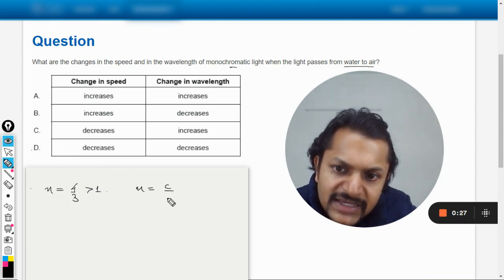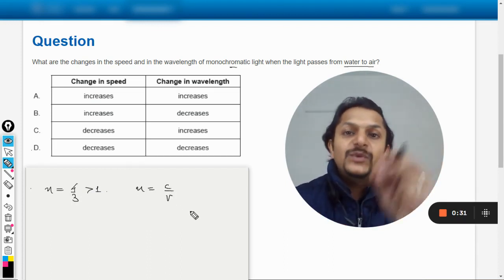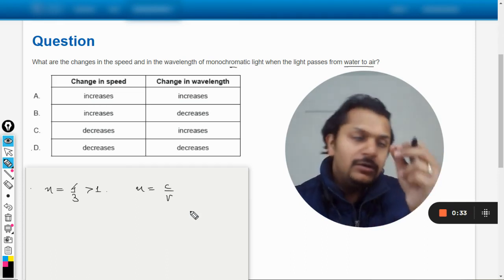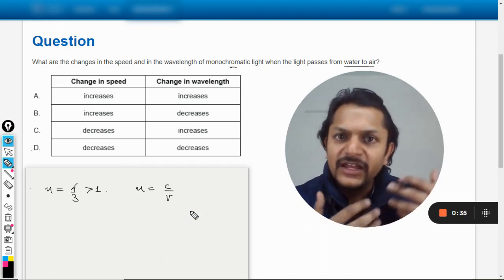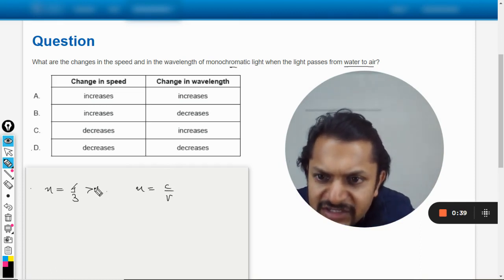A refractive index of a medium is the ratio of the speed of light in air to the speed of light in that medium. So from here I can say that if this is greater than 1, so c is greater than v.